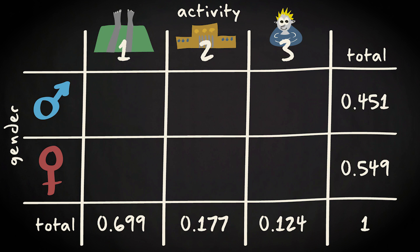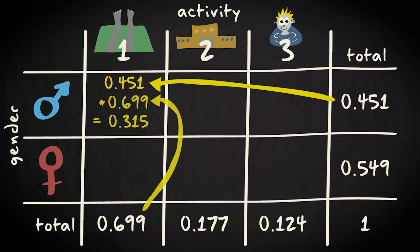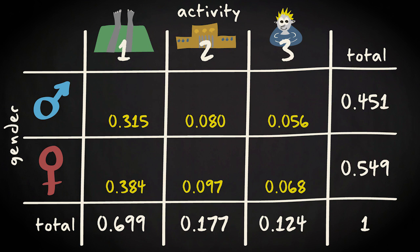We multiply the marginal probabilities for gender with those for the activities. If gender and activity at the beach would be independent, you would see these probabilities.